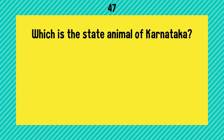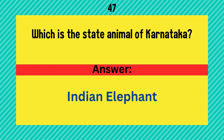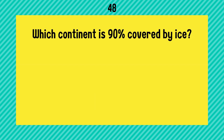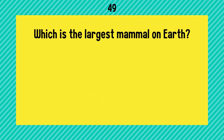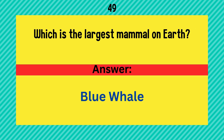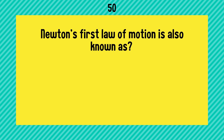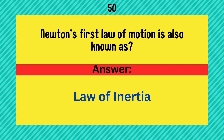Which is the state animal of Karnataka? It's an Indian elephant. Which continent is 90 percent covered by ice? Answer is Antarctica. Which is the largest mammal on earth? It's the blue whale. Newton's first law of motion is also known as the law of inertia.